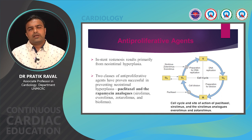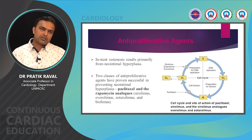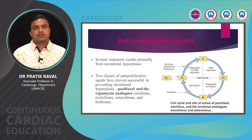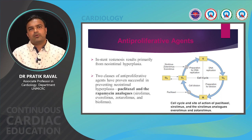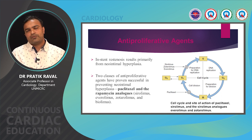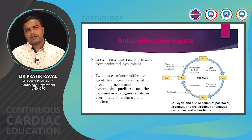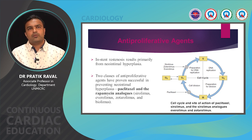In-stent restenosis results primarily from neointimal hyperplasia, and two classes of anti-proliferative agents have proven successful in preventing it: paclitaxel and rapamycin analogs, which include sirolimus, everolimus, zotarolimus, and biolimus. Paclitaxel chiefly acts at the M and G1 phases of the cell cycle, while rapamycin analogs act at the G1 and S phases to inhibit cell proliferation.